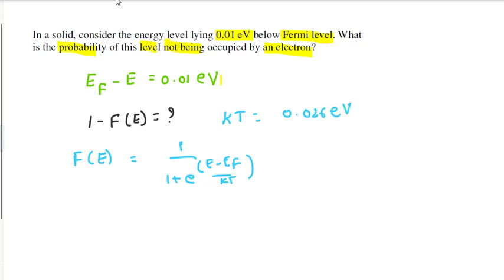kT is 0.026 electron volts. So substituting values: F(E) = 1/(1 + e^((Ef - E)/kT)) = 1/(1 + e^(0.01/0.026)). The value kT is 0.026 electron volts.